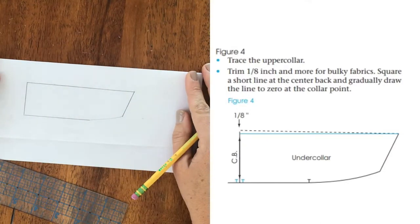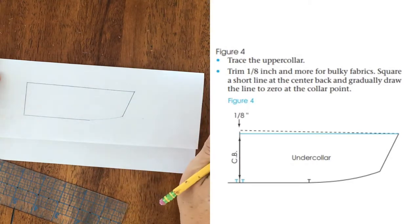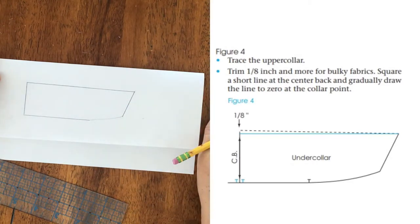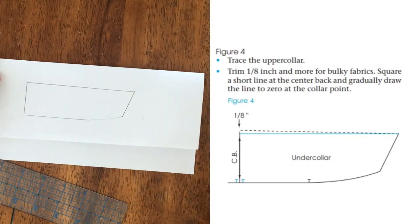Now I'm going to trim an eighth inch, and we are not going to switch to half scale. We will use one eighth inch, okay? So trim one eighth inch and more for bulky fabrics. We're just going to use muslin, so we'll stick with one eighth inch.